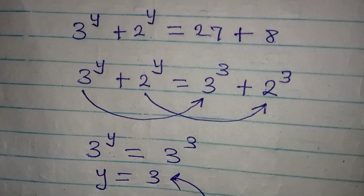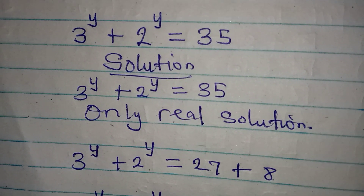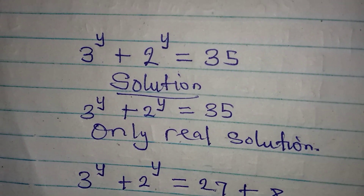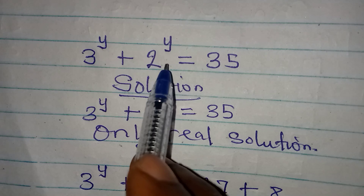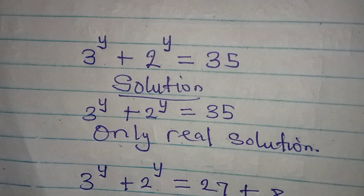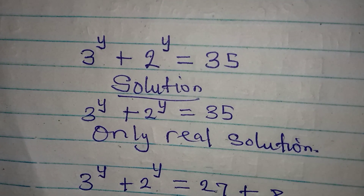Thank you for watching. If you were the one, how would you have solved 3^y + 2^y = 35? Let us have your response in the comment section.